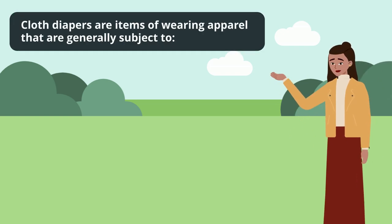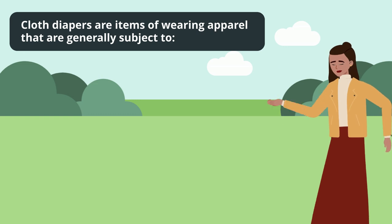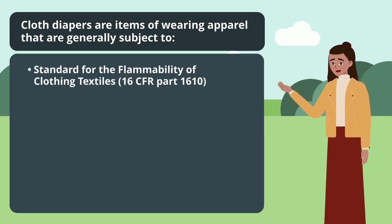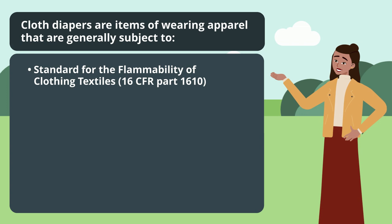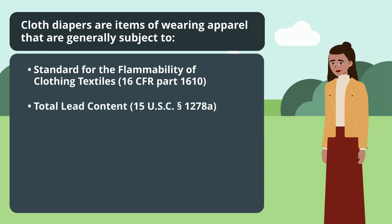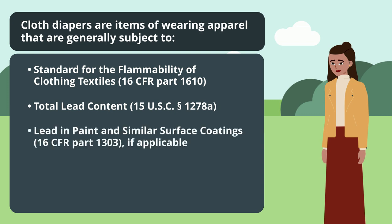Cloth diapers are items of wearing apparel that are generally subject to flammability requirements under 16 CFR part 1610, the standard for the flammability of clothing textiles, total lead content and substrate requirements under 15 USC section 1278A, and lead in paint and surface coating requirements under 16 CFR part 1303, if applicable.